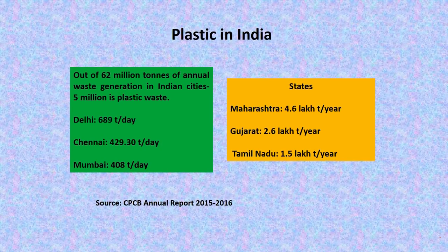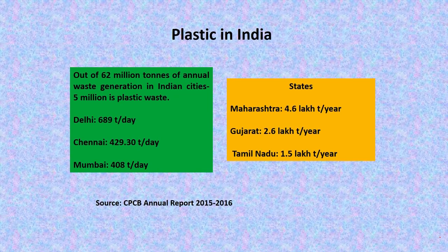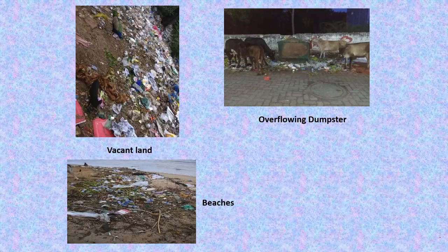Gujarat comes second, producing 2.6 lakh tons (0.26 million tons) per year, and Tamil Nadu produces 0.15 million tons per year. As mentioned, plastic is found everywhere.